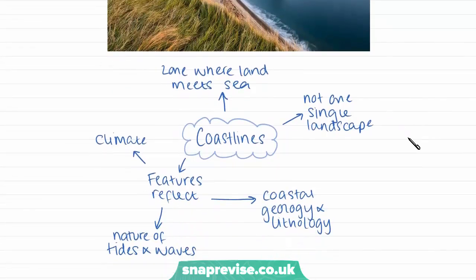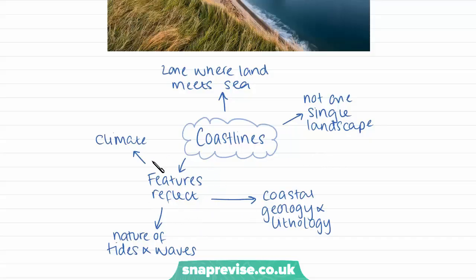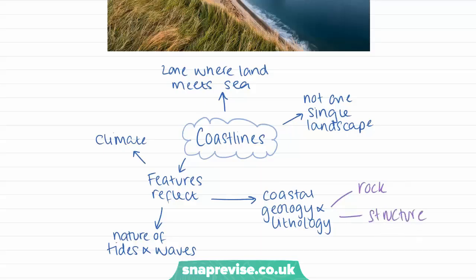To give a brief introduction to coastlines: coastlines are where the land meets the sea, and they don't have one specific or single landscape. Coastal zones tend to be made up of a variety of different features, and not all coasts have the same combination of features. All the features tend to reflect different factors in the environment, such as the climate, the nature of the tides and waves, and also the coastal geology and lithology, which relates to the different types of rock and how the rock is structured in the area. This is important because different rocks are more or less resistant to erosion, which is why we get lots of different types of landforms forming.